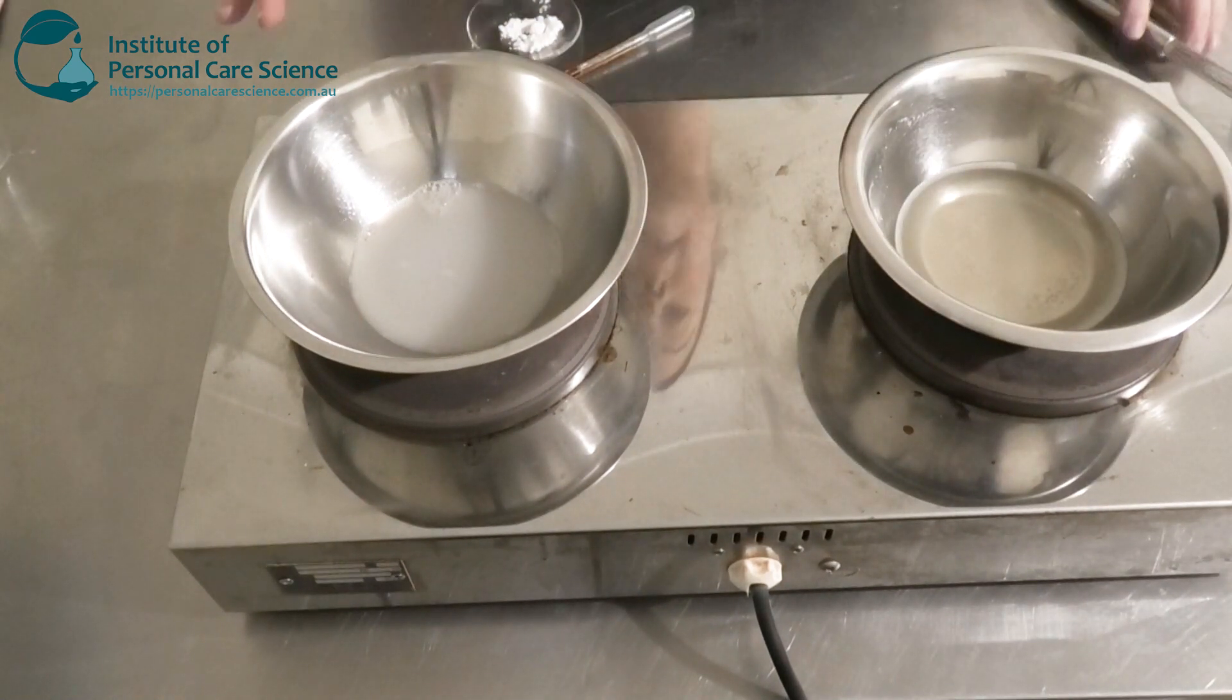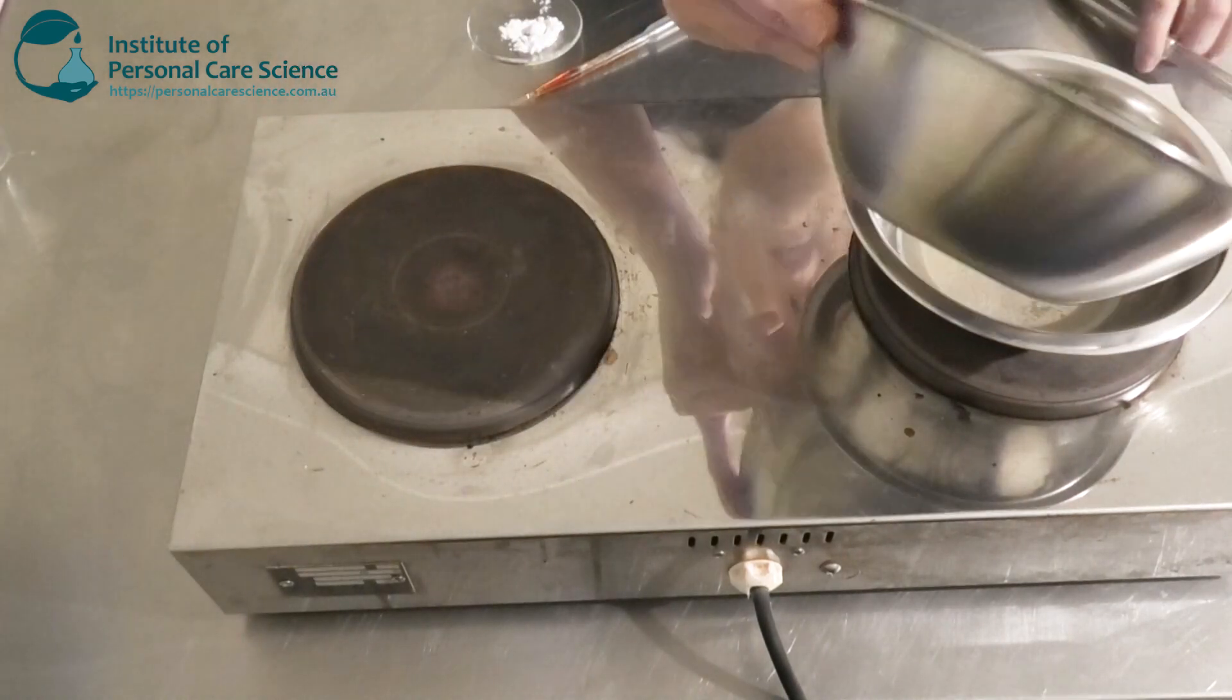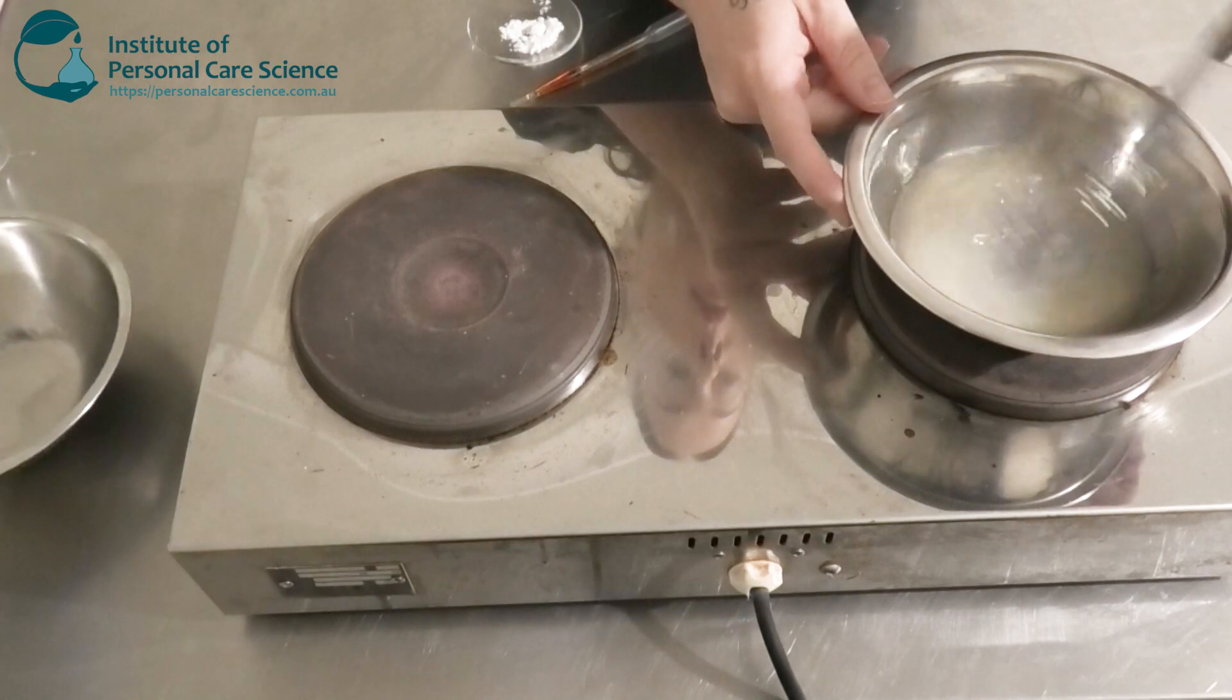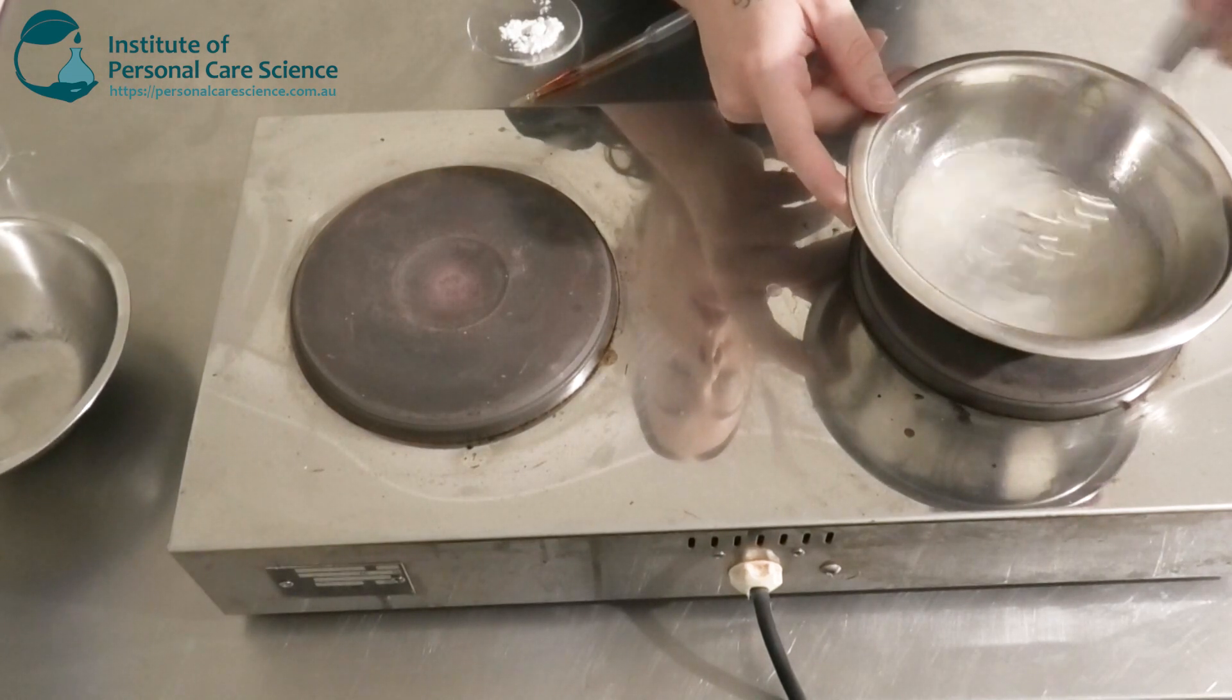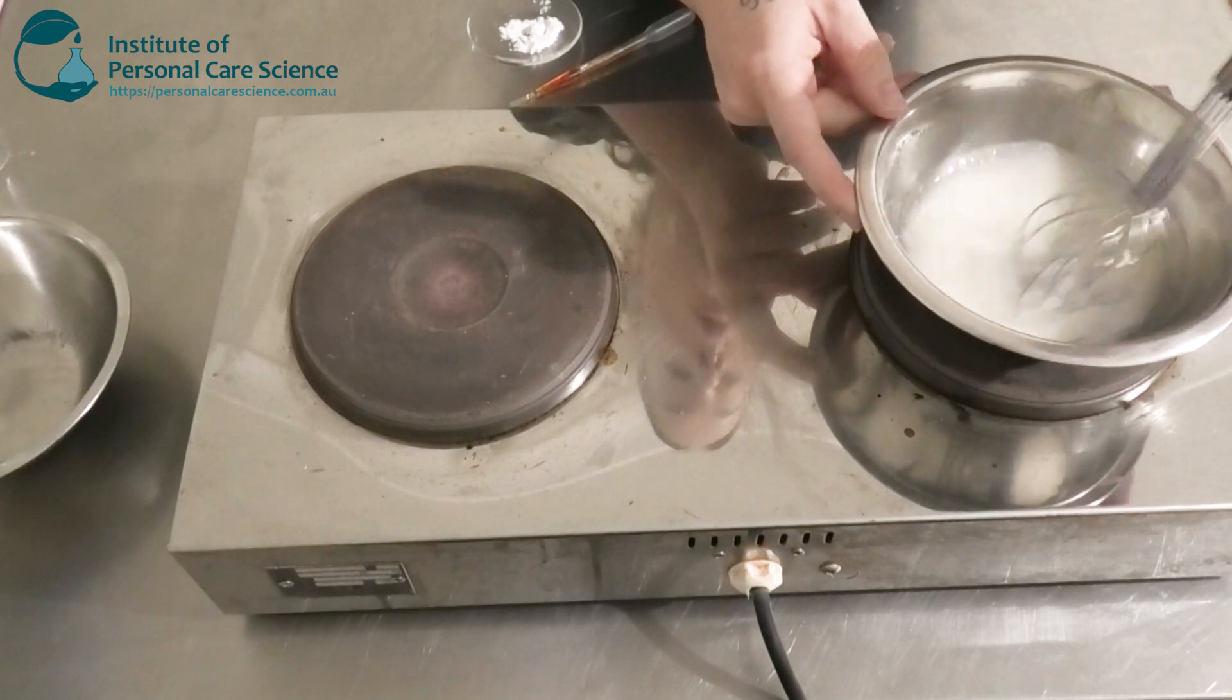Now, once both phases are heated to about 75 degrees, I'm going to add my water phase to my oil phase. I'm going to give that a stir using high shear and you'll start to see a nice white glossy emulsion form.